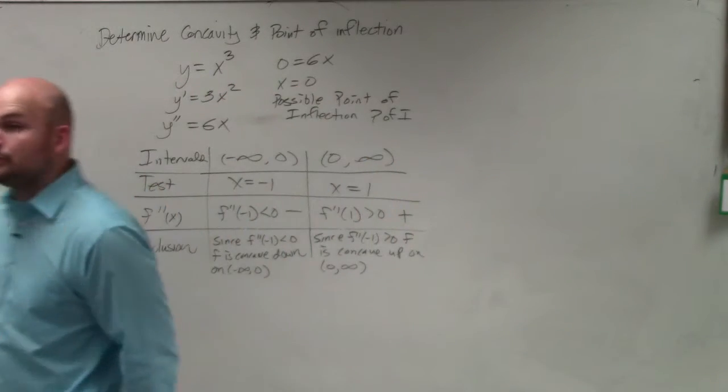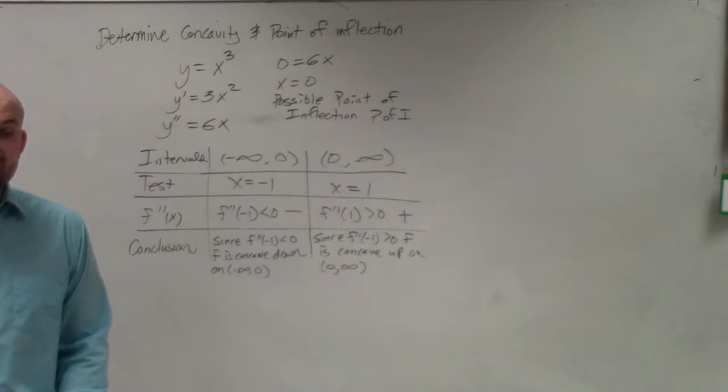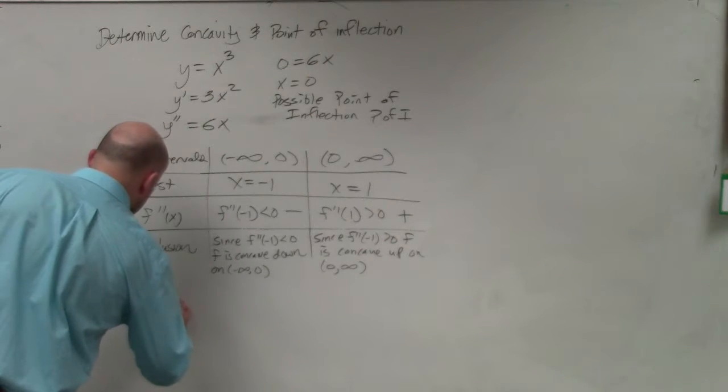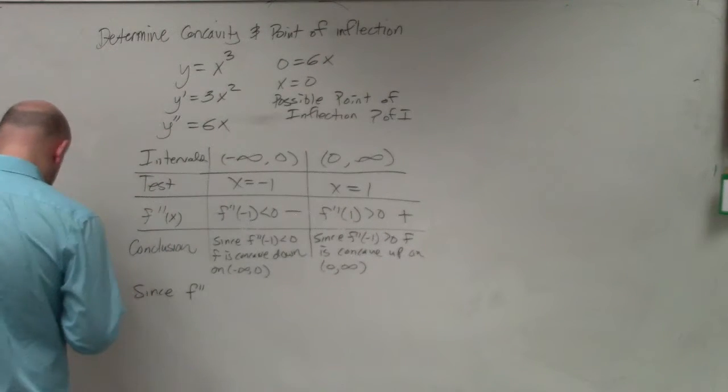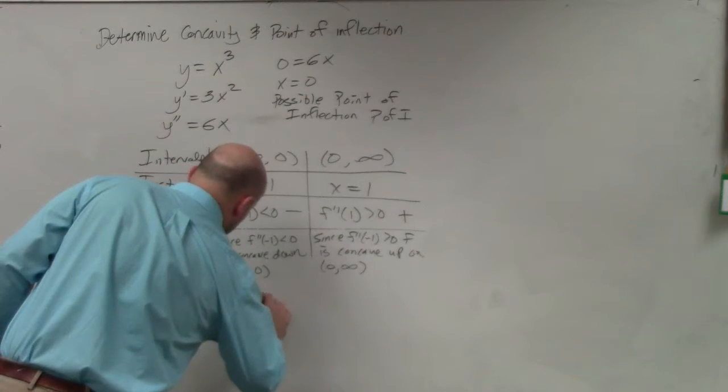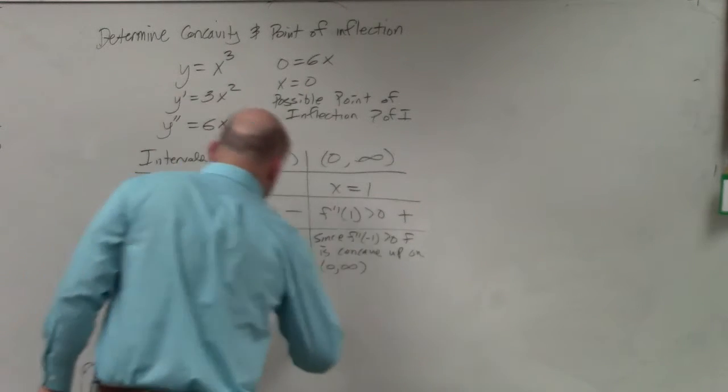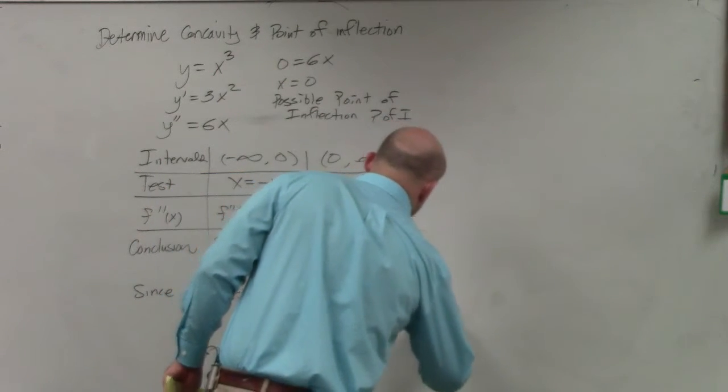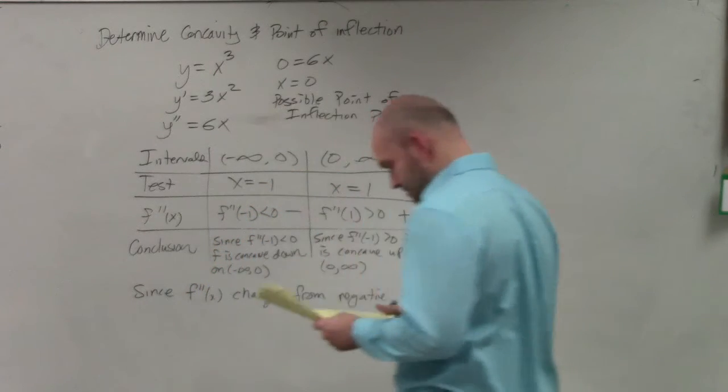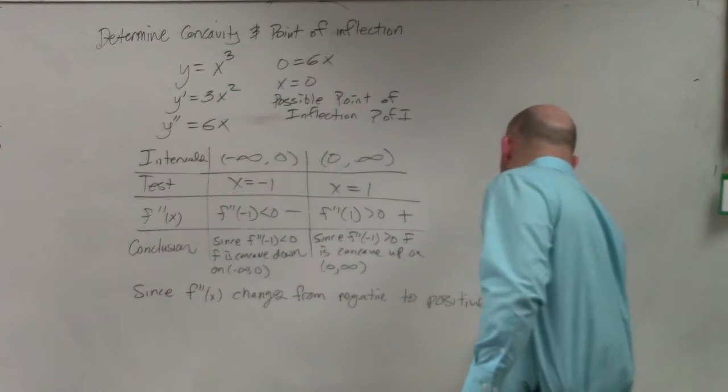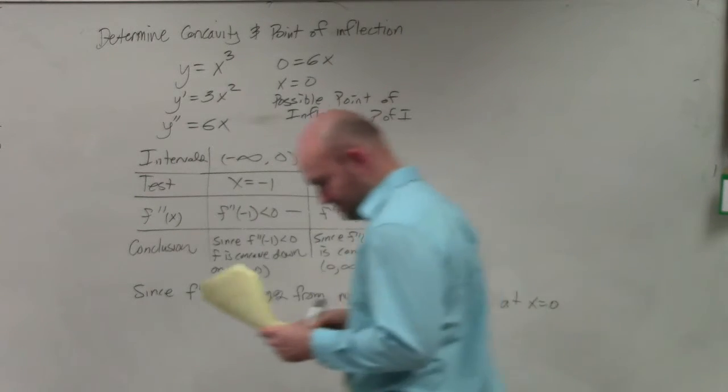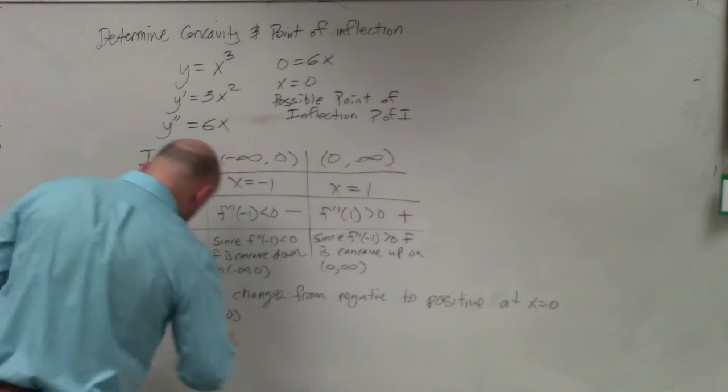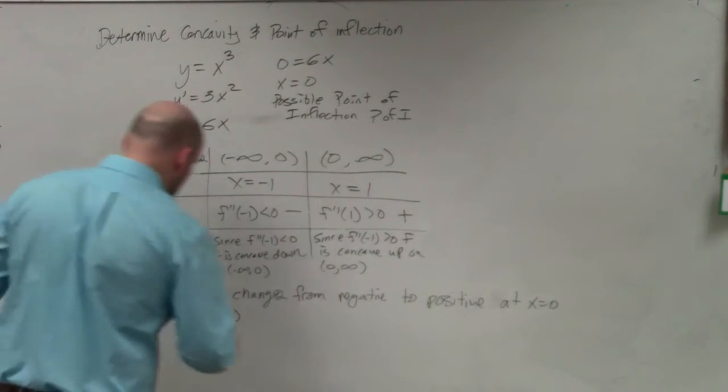And then last but not least, we're going to justify our point of inflection. So we can say that since f double prime of x changes from negative to positive at x equals 0, the point 0 comma 0 is a point of inflection.